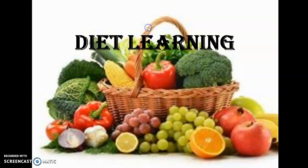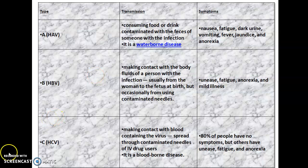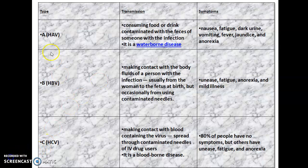Types of hepatitis — they are of six types: A, B, C, D, E, and G.